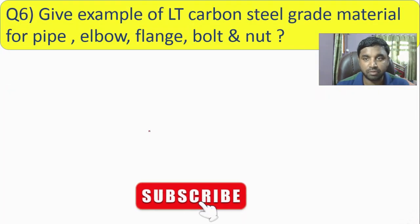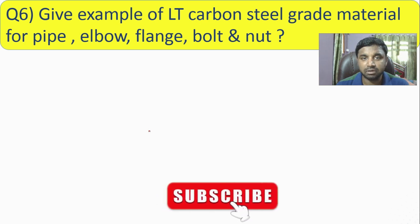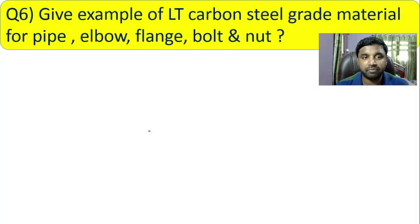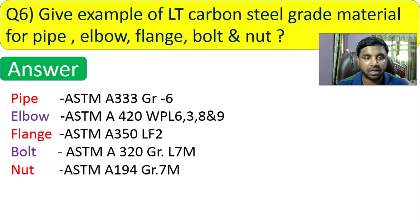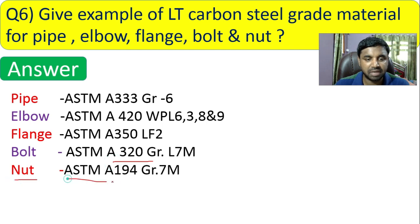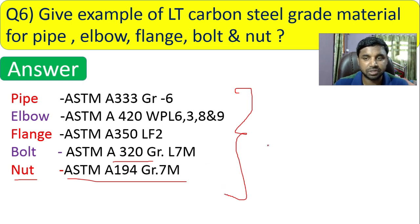Question 6: give examples of low temperature carbon steel (LTCS) grade material for pipe, elbow, flange, bolt, and nut. Pipe: ASTM A333 Grade 6. Elbow: ASTM A420 WPL6, WPL3, WPL8, and WPL9. Flange: ASTM A350 LF2. Bolt: ASTM A320 Grade L7M. Nut: ASTM A194 Grade 7M. You must remember these grades.